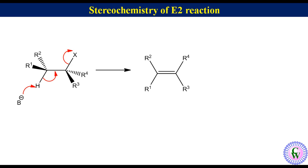Here proton abstraction and elimination of leaving group occurs in the same step. In this reaction, C-H sigma bonding orbital of the reactant overlaps with the C-X anti-bonding sigma orbital to produce new pi bond.